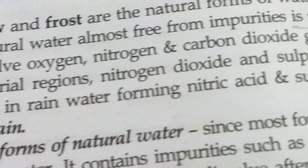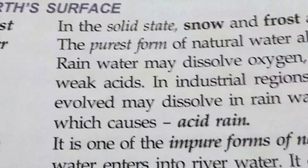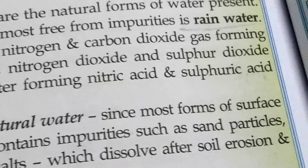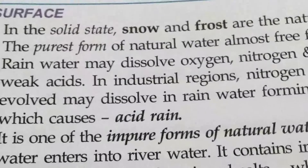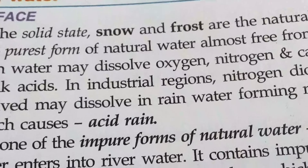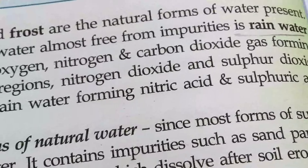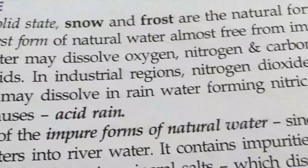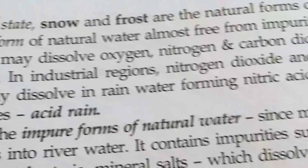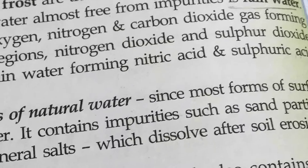In industrial regions, nitrogen dioxide and sulfur dioxide that have evolved may dissolve in rain water, forming nitric acid and sulfuric acid, which causes acid rain. So basically, in the case of industrial areas, nitrogen dioxide and sulfur dioxide are present in the atmosphere and dissolve in rain water, forming acid rain in the form of nitric acid and sulfuric acid.